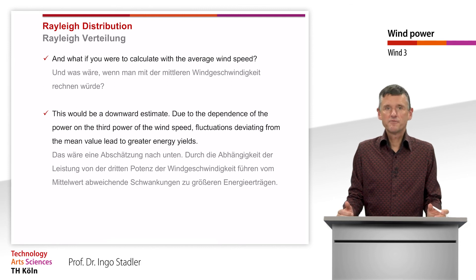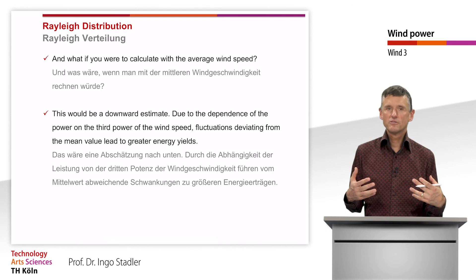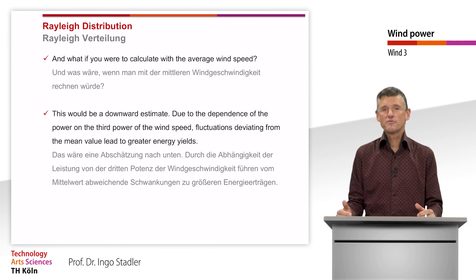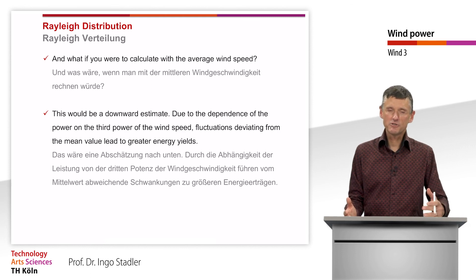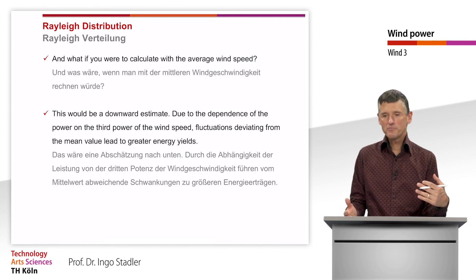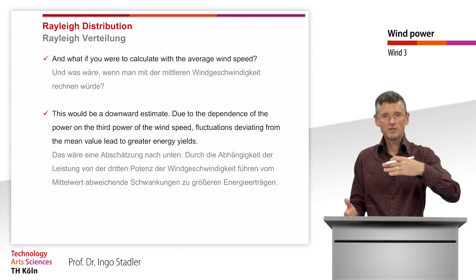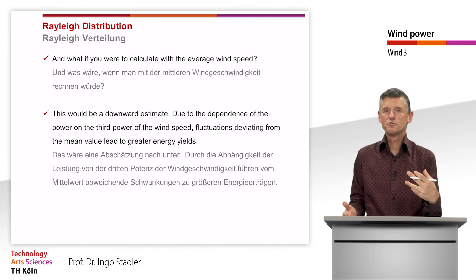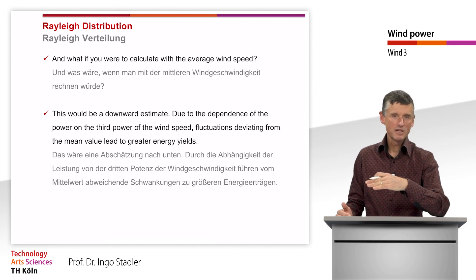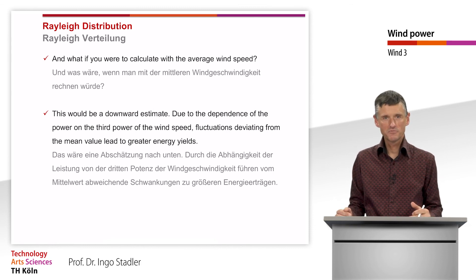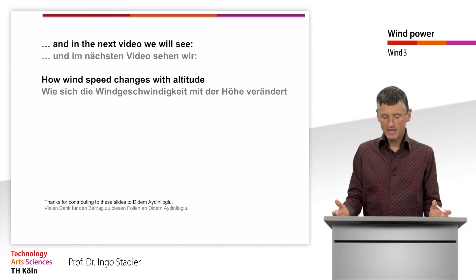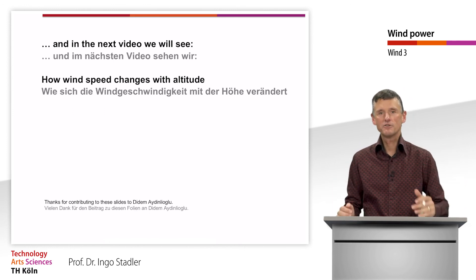To finish this consideration: if we calculate just with the mean wind velocity we always get a worst-case result, because all deviations above the mean count more — due to the power depending on velocity to the third power — giving lower energy yields than reality. In the next video we will look at how wind speeds change with height above ground. Thank you very much.